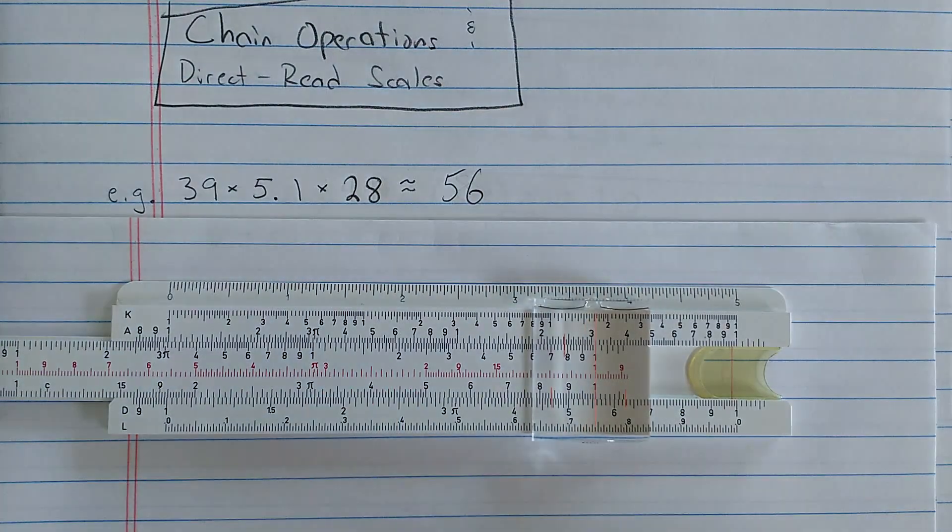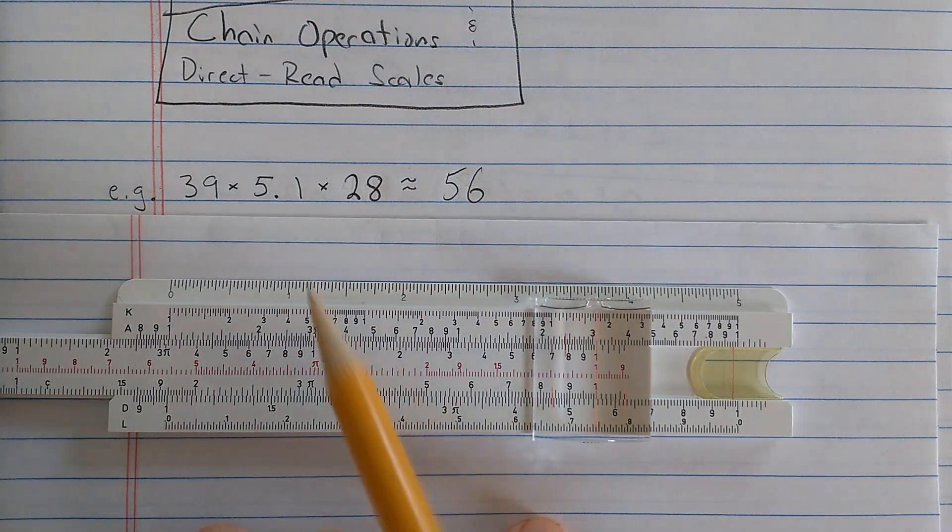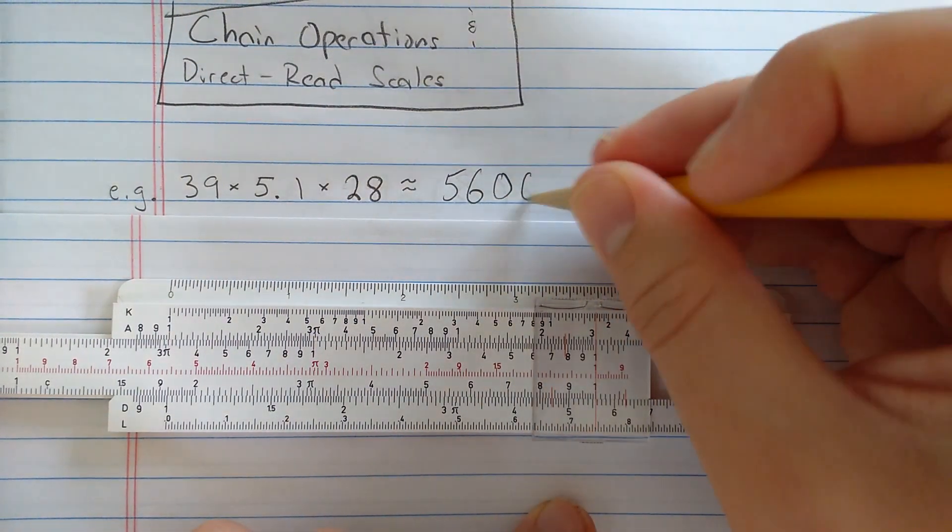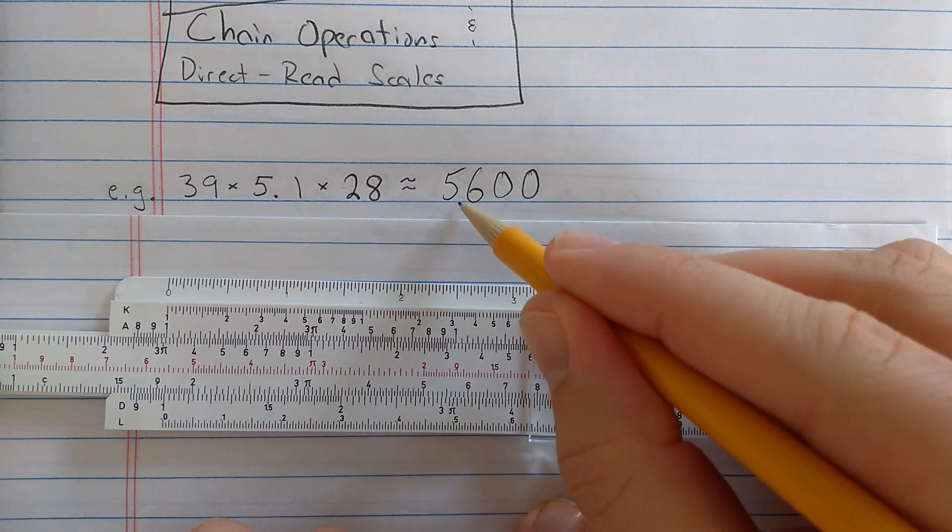And what I get here, you can see, is about 5.6. And then as usual, I need to estimate the magnitude. The correct magnitude should give me two more zeros here, 5,600.